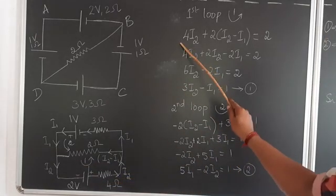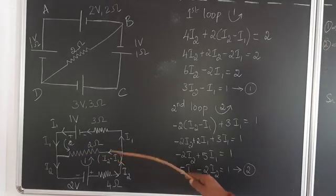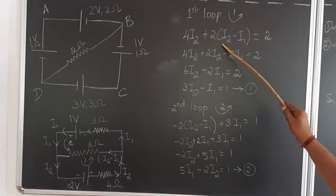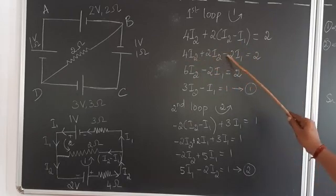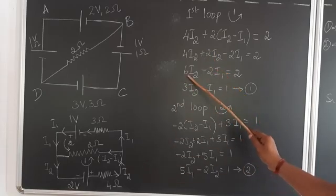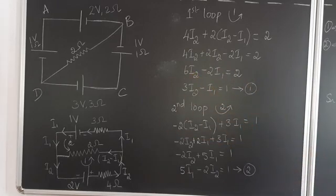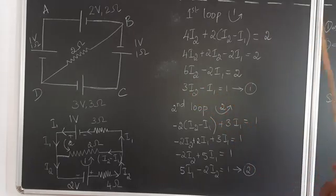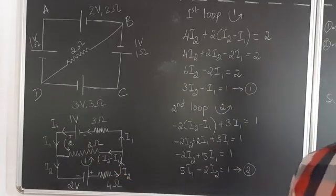Since both assumed current and actual flow are in the same direction, it is positive. For the 2 ohm resistor, the current is i2 minus i1, so we add 2 times (i2 minus i1) = 2. Expanding: 4i2 + 2i2 − 2i1 = 2, which gives 6i2 − 2i1 = 2. Dividing throughout by 2: 3i2 − i1 = 1. This is equation 1.